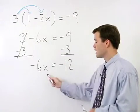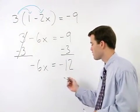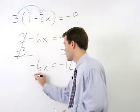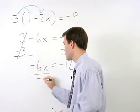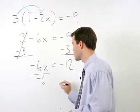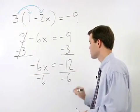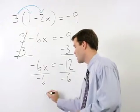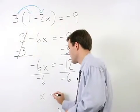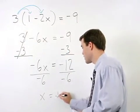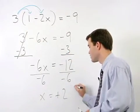To get x by itself, we divide both sides by negative 6. And x equals positive 2.